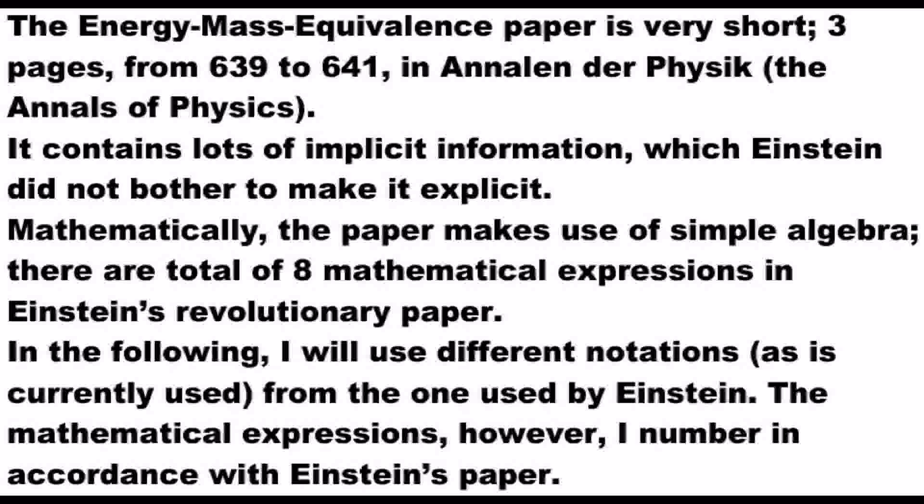It contains lots of implicit information, which Einstein did not bother to make explicit. Mathematically, the paper makes use of simple algebra; there are a total of 8 mathematical expressions in Einstein's revolutionary paper. In the following, I will use different notations, as currently used, from the one used by Einstein. The mathematical expressions, however, I number in accordance with Einstein's paper.